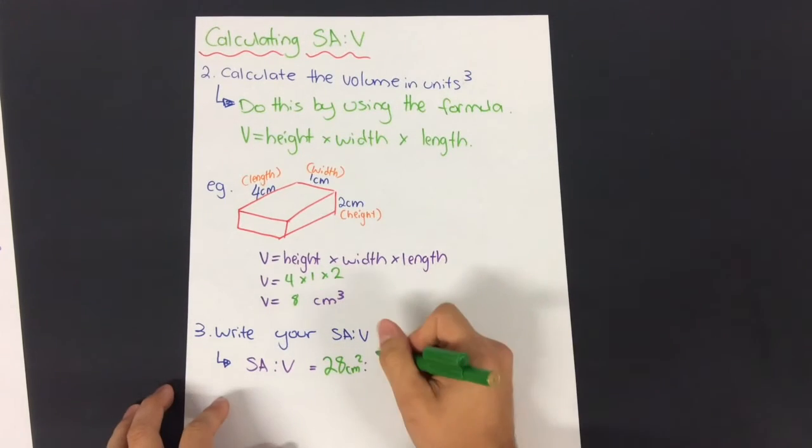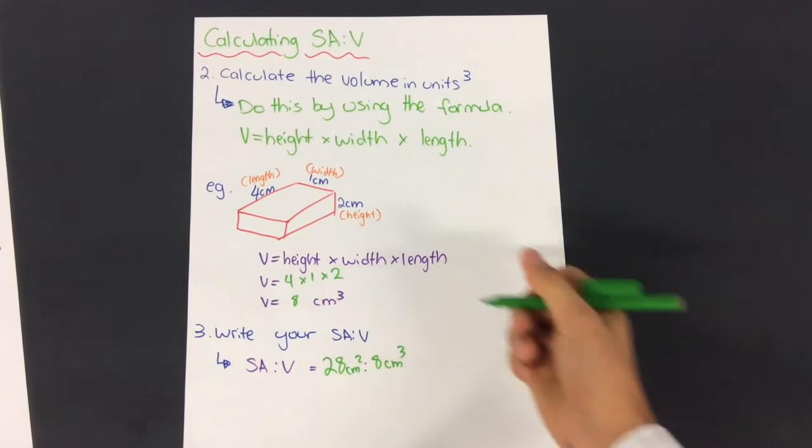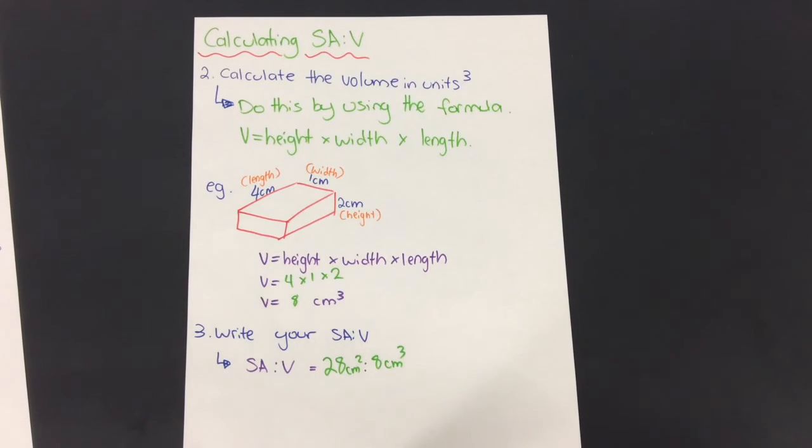And then your volume was eight centimeters cubed. What I would do with that piece of information is compare it to another object's surface area to volume ratio, and whichever one had a greater surface area to volume ratio, the more efficient that object would be able to exchange substances.